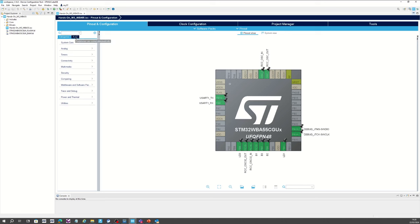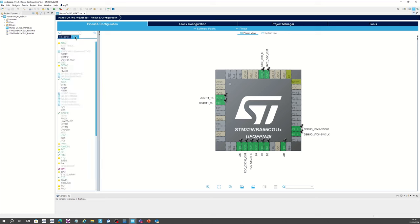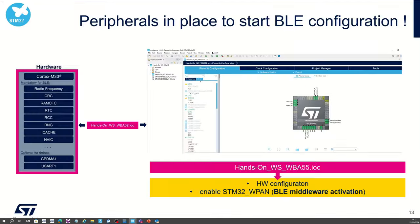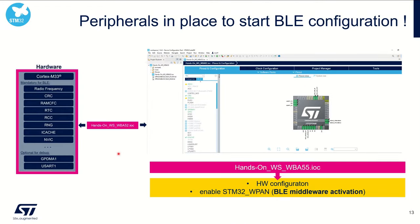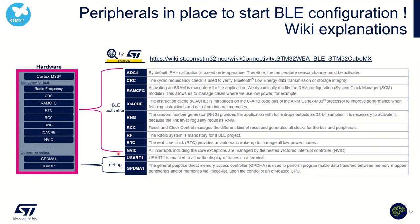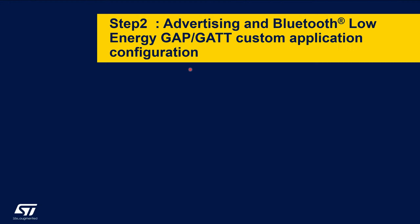If I click through to AZ, I will find that some blocks are already in green, meaning those blocks have been enabled. They are mandatory to later activate the BLE. If you want more details about why you need RTC or RCC, you can check the wiki page for the rationale.